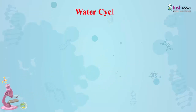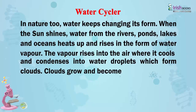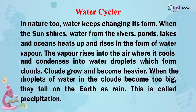Water Cycle. In nature, water keeps changing its form. When the sun shines, water from the rivers, ponds, lakes, and oceans heats up and rises in the form of water vapour. The vapour rises into the air where it cools and condenses into water droplets, which form clouds. Clouds grow and become heavier. When the droplets of water in the clouds become too big, they fall on earth as rain.